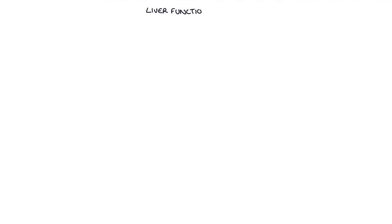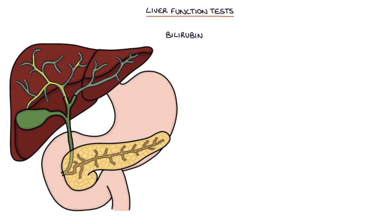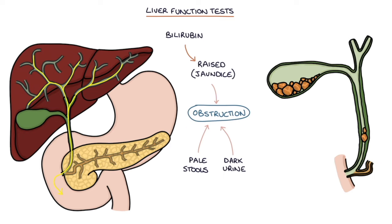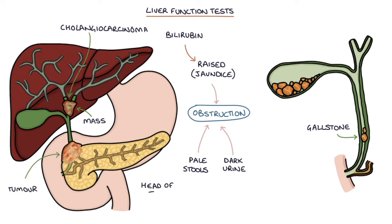Let's talk about liver function tests. Firstly, bilirubin. Bilirubin normally drains from the liver through the bile ducts and into the intestines. If the liver function tests show a raised bilirubin — which is called jaundice — and the patient has pale stools and dark urine, this represents an obstruction to flow within the biliary system. Bilirubin is not able to flow out of the bile duct. Obstruction may be caused by a gallstone in the bile duct or by an external mass pressing on the bile duct, for example a cholangiocarcinoma or a tumour of the head of the pancreas.